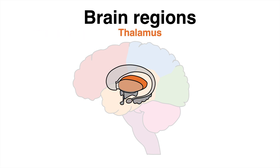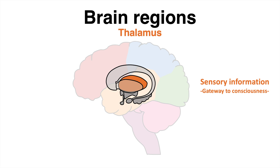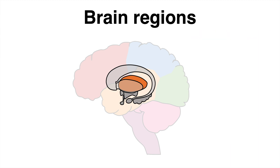One such structure is the thalamus, also referred to as the gateway to consciousness. The thalamus is mainly famous for its role in connecting sensory and sensitive information coming from the periphery, passing it on to the cortex after filtering the information.